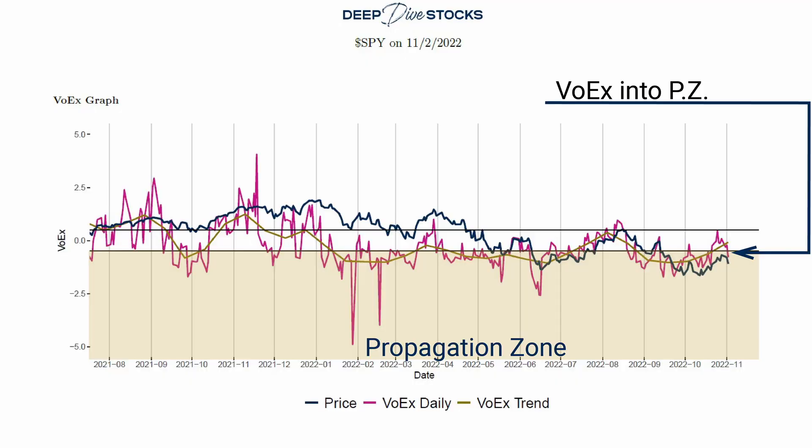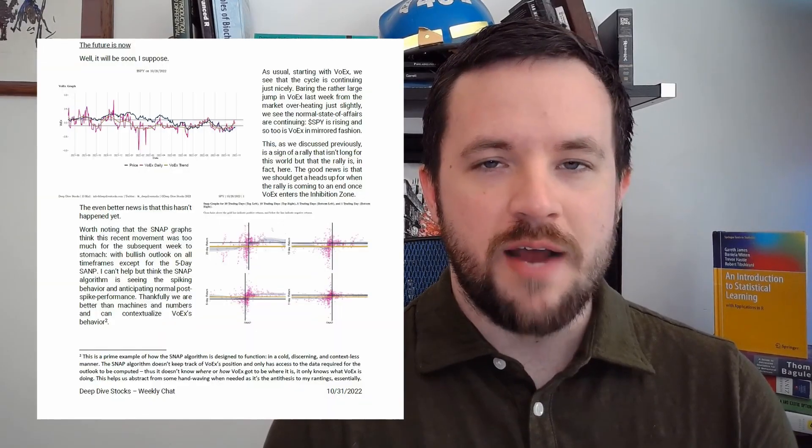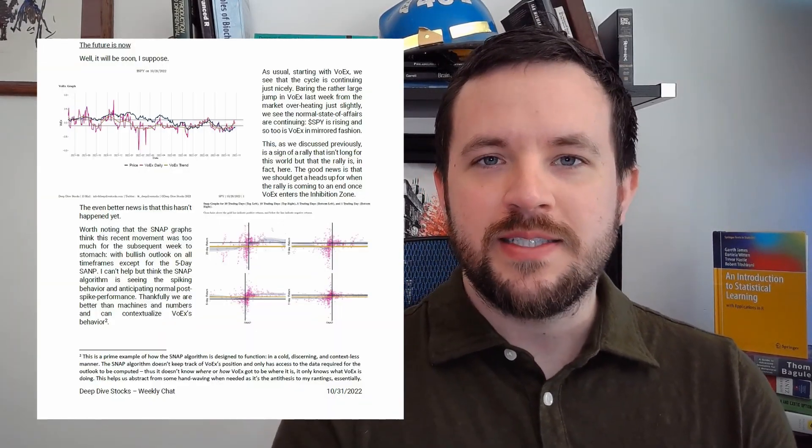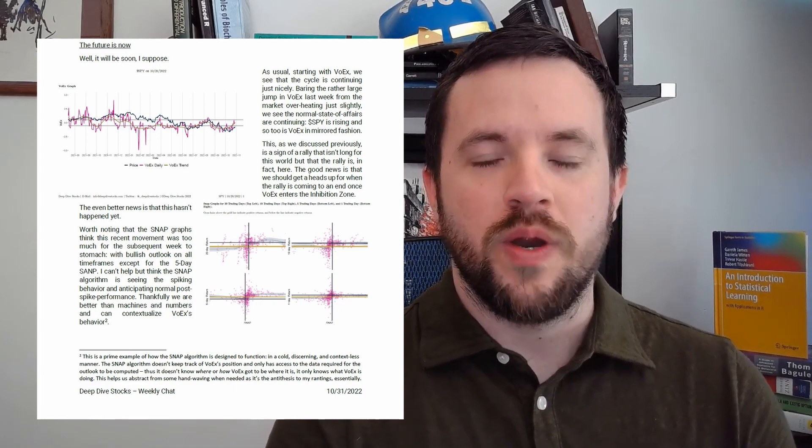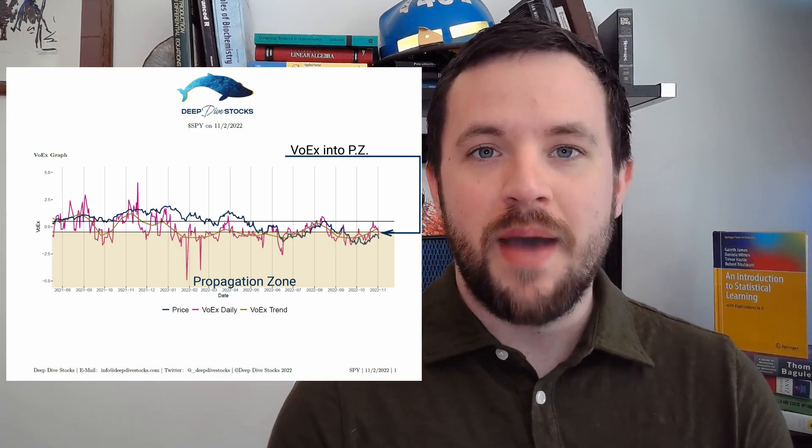Starting with Vorex, we see that there has been a trend with Vorex with rallies, and we've been talking about this in the weekly chat for quite a while now. It's been a pretty consistent and reliable indicator for when rallies are starting and when rallies end. However, the most recent Fed meeting has demonstrated quite a disturbance in Vorex, such that it is now breaking from the pattern.